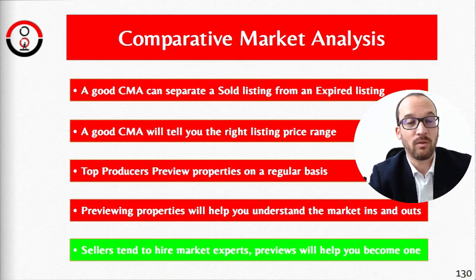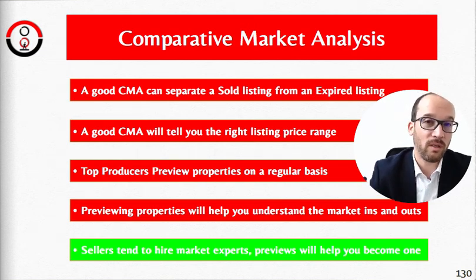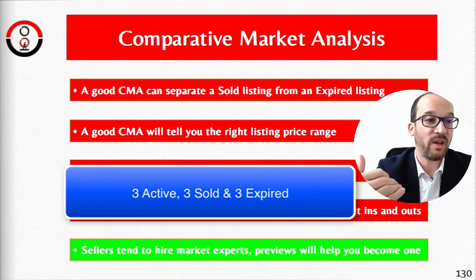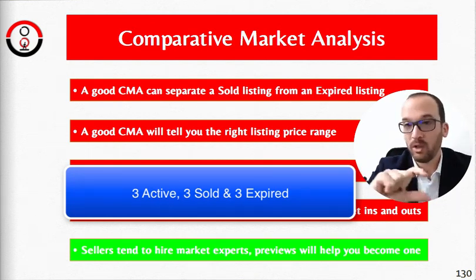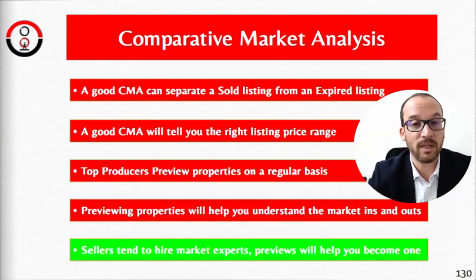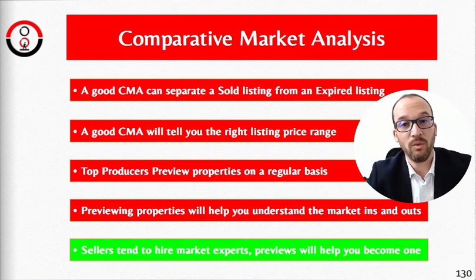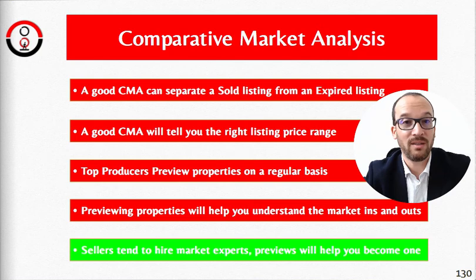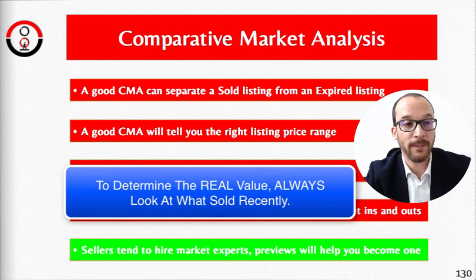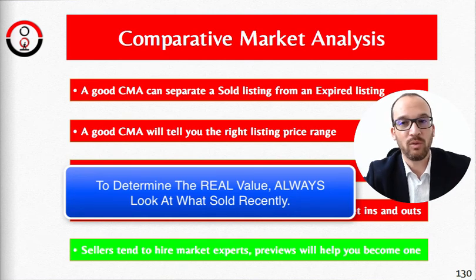On a CMA, you want three active listings very similar to the one you're analyzing, and three sold listings. Look back six months, and if you can't find a perfect match like a ranch, three bedroom, one bath, go back twelve or even eighteen months in some markets. The real value comes only from the sold listings — active listings just show what people are asking, not what they'll get.